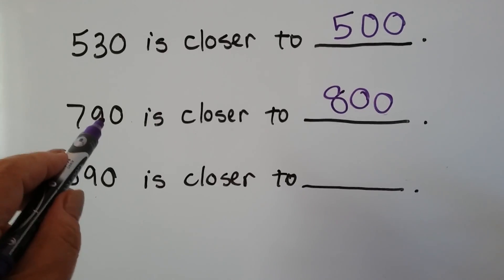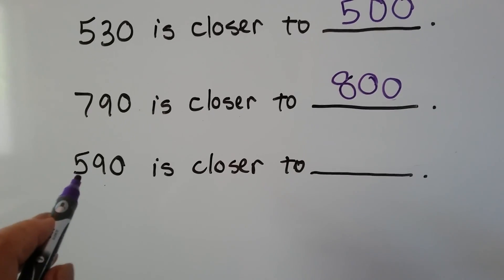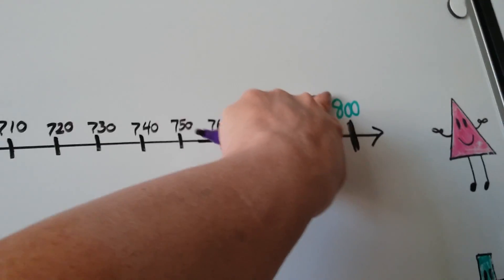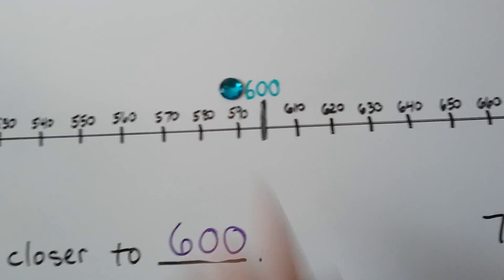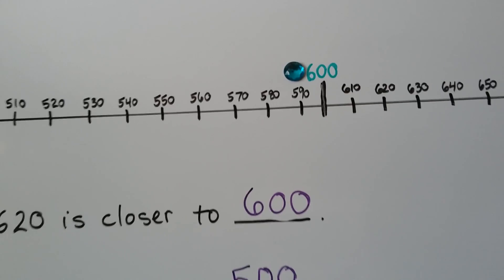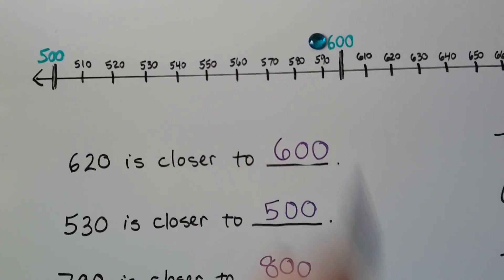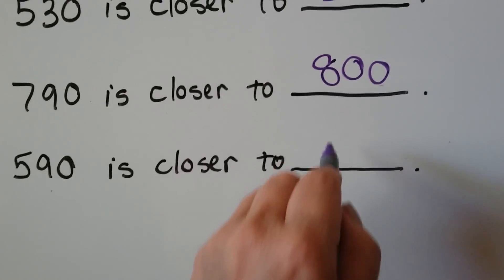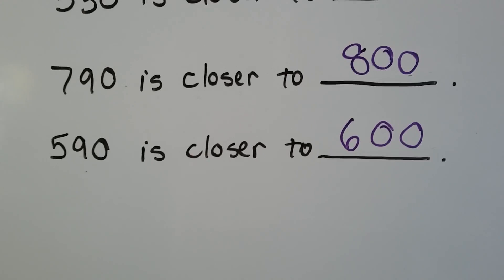That 90 means it's almost to the next 100. How about 590? Let's move our jewel all the way back to 590, which is right here. We can see that it's very close to 600. It's in between the 500 and the 600, but it's very close to the 600. So 590 is closer to 600, and when we round it to the nearest 100, it would be 600.